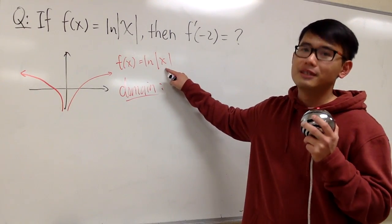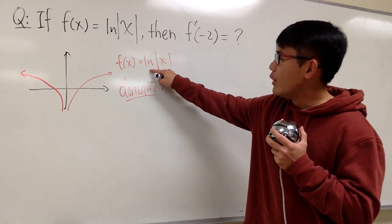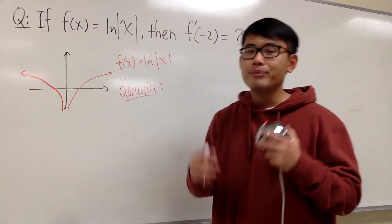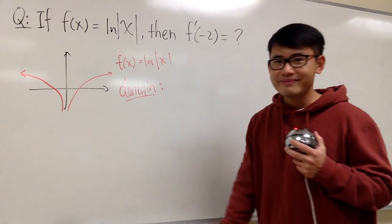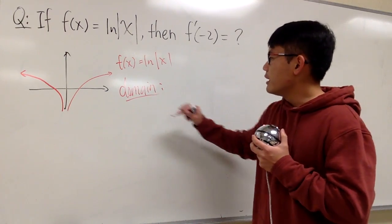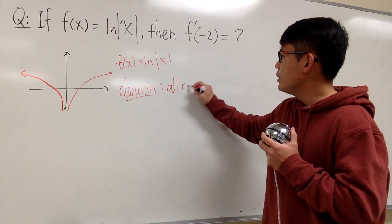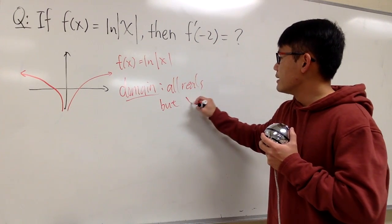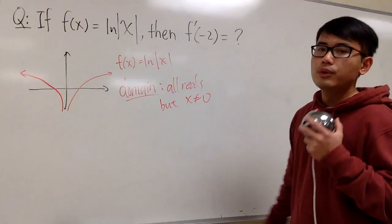However, we are still not allowed to plug in 0, because ln of absolute value of 0, absolute value of 0 is still 0, ln of 0 is not defined. So, the domain is all real numbers. Let me just write this down as all reals, except for x is not equal to 0.